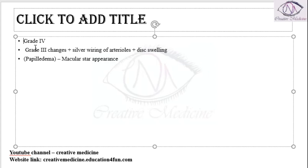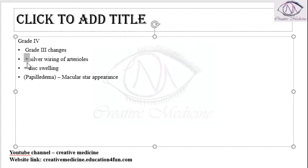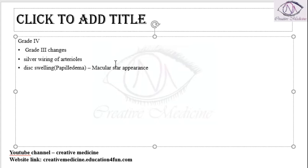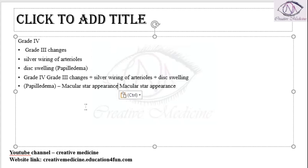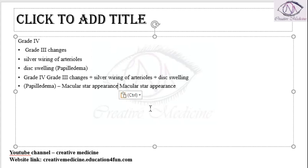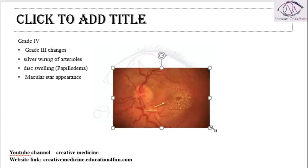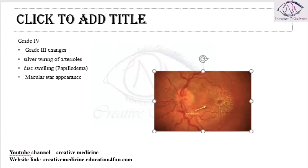In Grade 4 hypertensive retinopathy, we have all the changes of Grade 3 along with silver wiring of arterioles, disc swelling which is papilledema, and a macular star appearance. You will see the macular star, which looks like a star pattern at the macula.